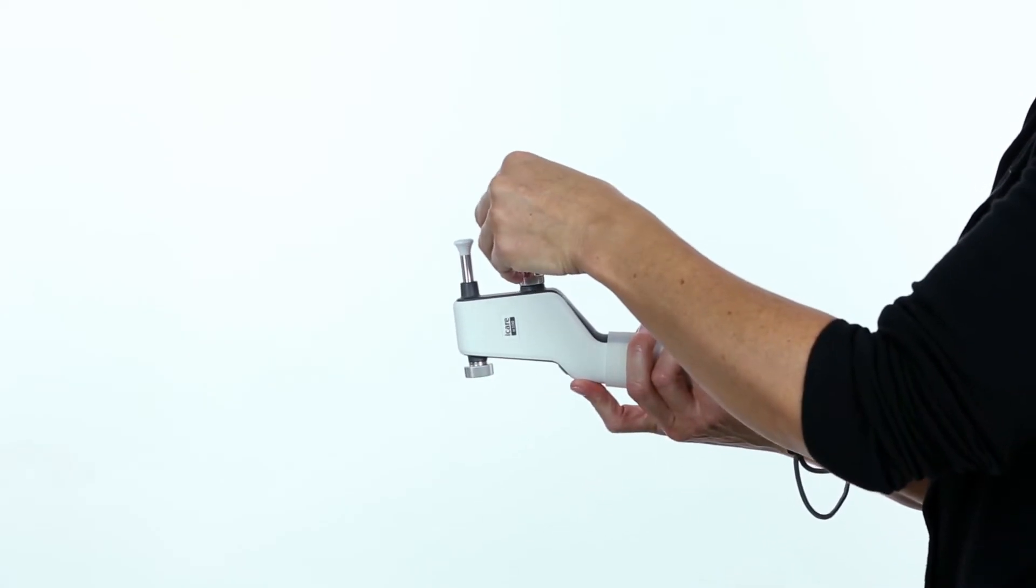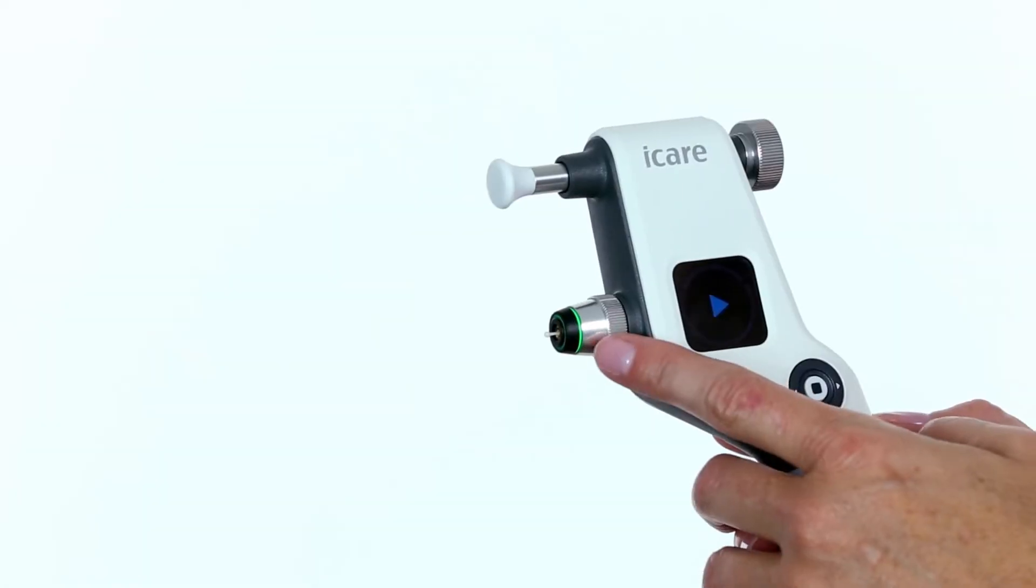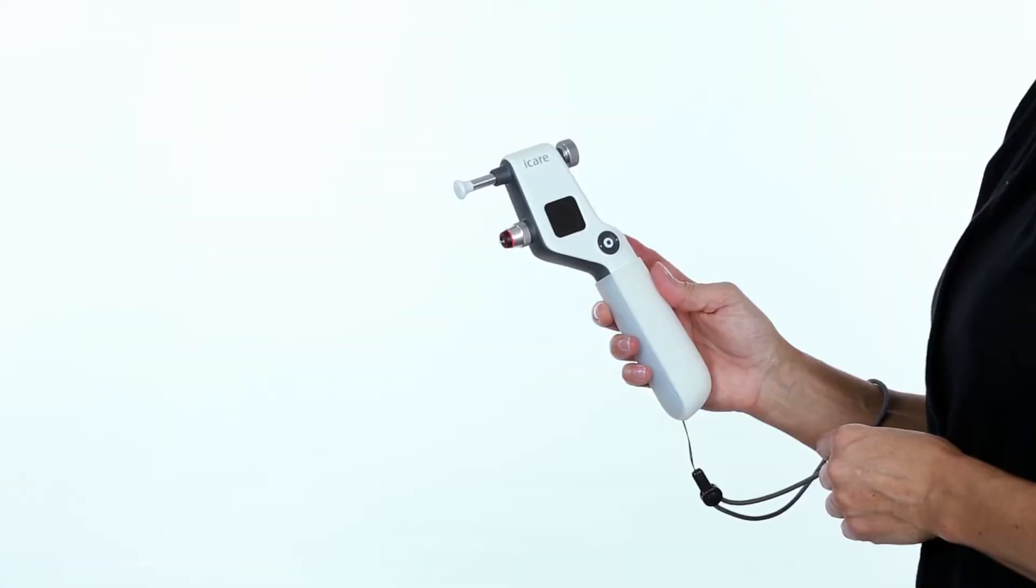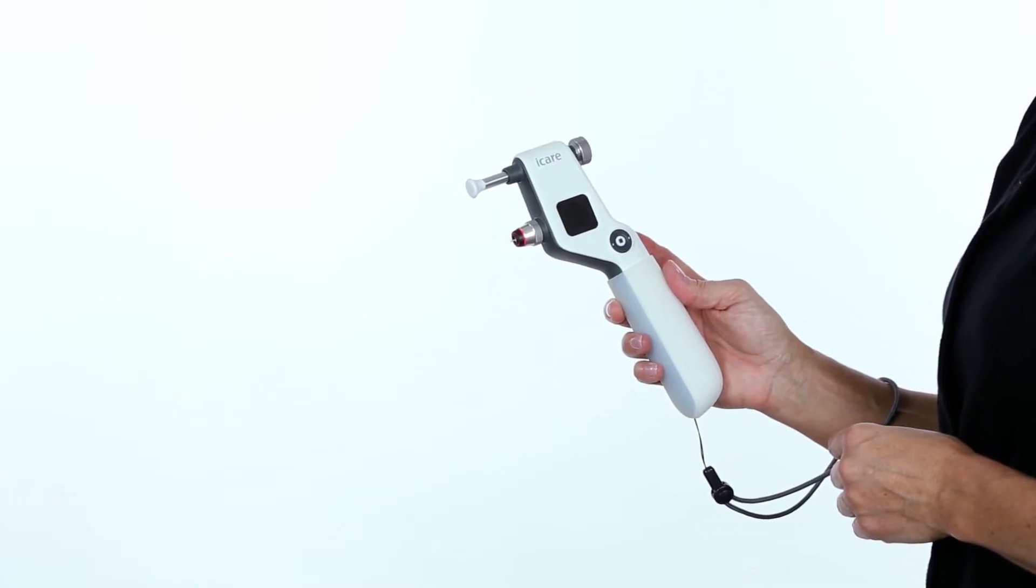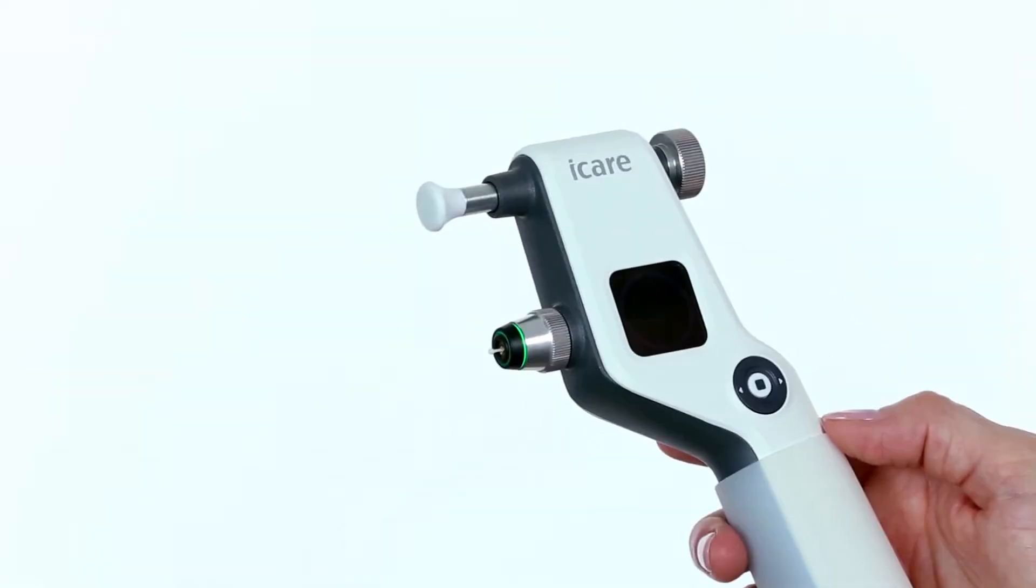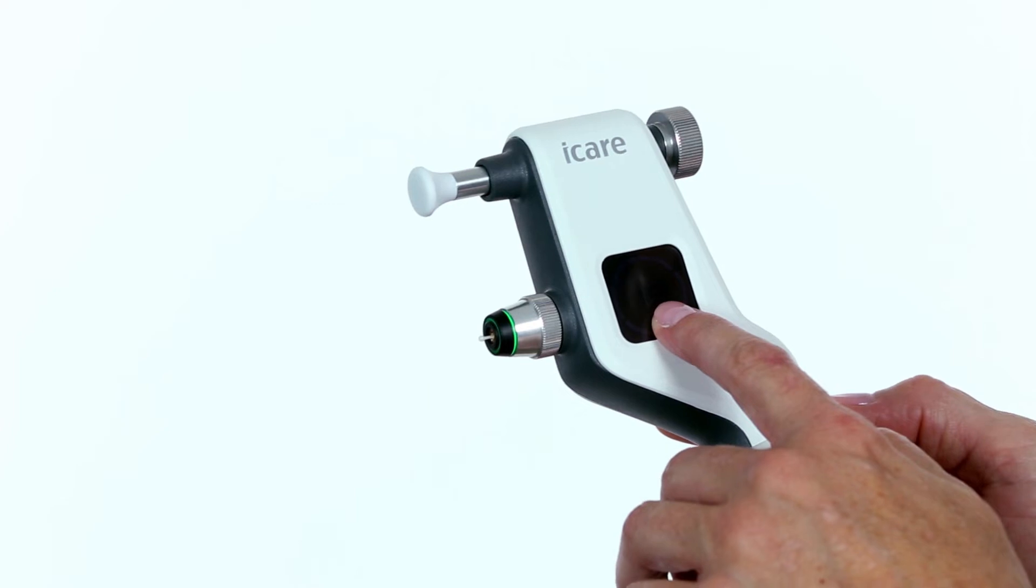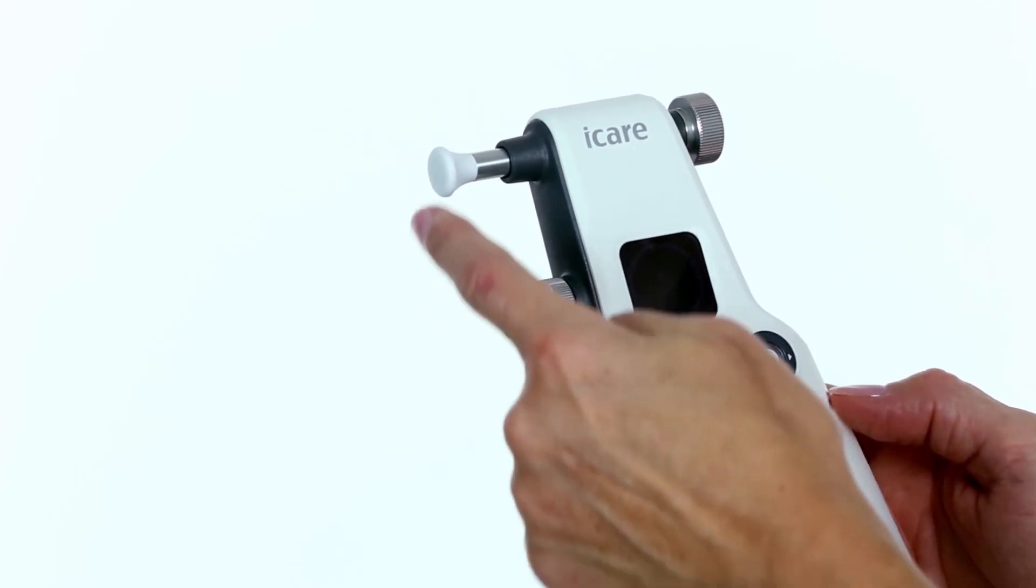Once the probe has been inserted into the tonometer, a green or red light will be visible around the probe base. The probe will automatically magnetize and it will not fall out. The tonometer is ready to take a measurement when the blue play symbol appears on the display.